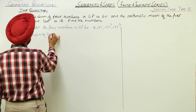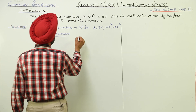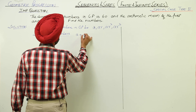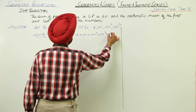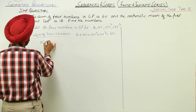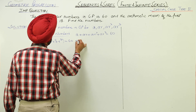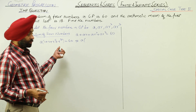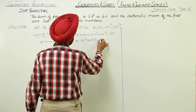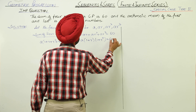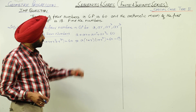Sum of 4 numbers: a + ar + ar² + ar³ = 60. Taking a common: a(1 + r + r² + r³) = 60. Then taking r² as a common factor from the second pair: a(1 + r)(1 + r²) = 60. This is equation number 1.